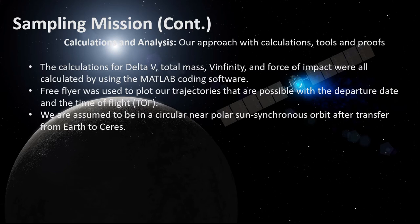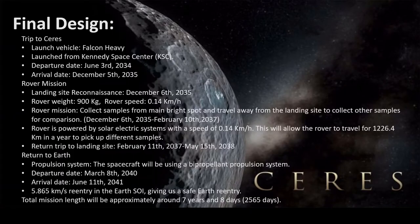We assumed to be in a circular near-polar sun-synchronous orbit after transfer from Earth to Ceres. Our final design can be summarized in three parts: the trip to Ceres, the rover mission, and the return to Earth. We start with our launch vehicle, the Falcon Heavy. We launch from the Kennedy Space Center on June 3, 2034, and we arrive at Ceres on December 5, 2035.